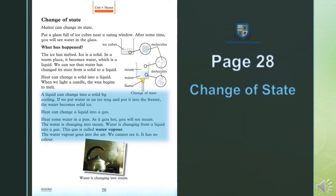Heat some water in a pan — ek bartan mein kuch pani ko garam karein. As it gets hot — jab wo garam ho jaye — you will see steam — aap ko bhaap nazar aayegi. The water is changing into steam — pani bhaap mein tabdil hona shuroo ho gaya hai. Water is changing from a liquid into a gas — pani liquid se gas mein tabdil ho raha hai. This gas is called water vapor — aur is gas ko hum water vapor, yani pani ke bukharat kehtay hain. The water vapor goes into the air — yeh water vapor hawa mein jaata hai. We cannot see it — hum ise dekh nahi saktay. It has no color.